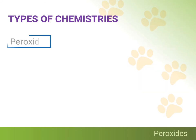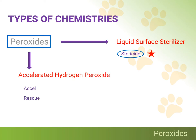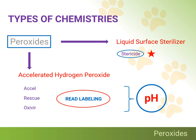Regarding peroxides, the two to be discussed will be the liquid surface sterilizer Stericide — something we believe every animal care facility in the country should have on hand in case of emergencies — and the accelerated hydrogen peroxide group of products: Xcel, Rescue, and Oxivir. Here too, pH plays a very important role in understanding the suitability of these products for use in animal care facilities. Reading labeling is a must to properly evaluate the true economics of using some of these products. The cost savings purported by some are based solely on non-food contact sanitizer labeling claims, and unfortunately do not represent the true economics of using these as a disinfectant.